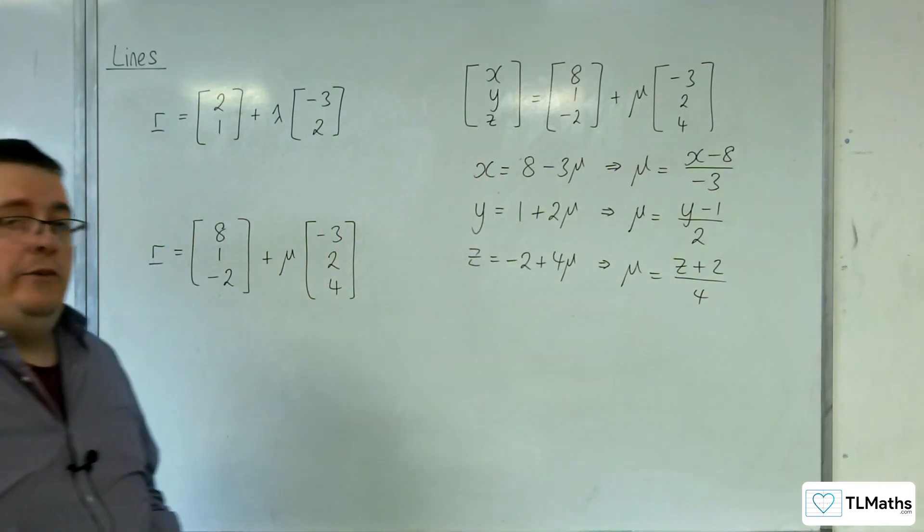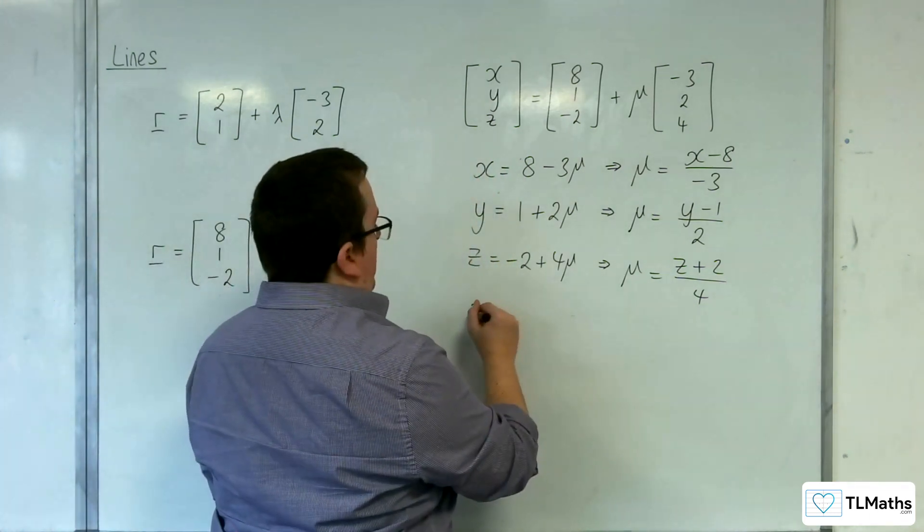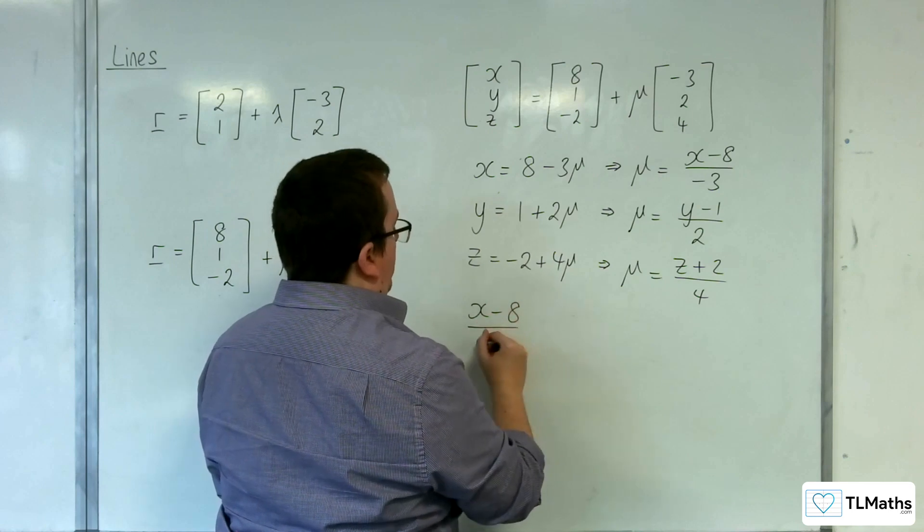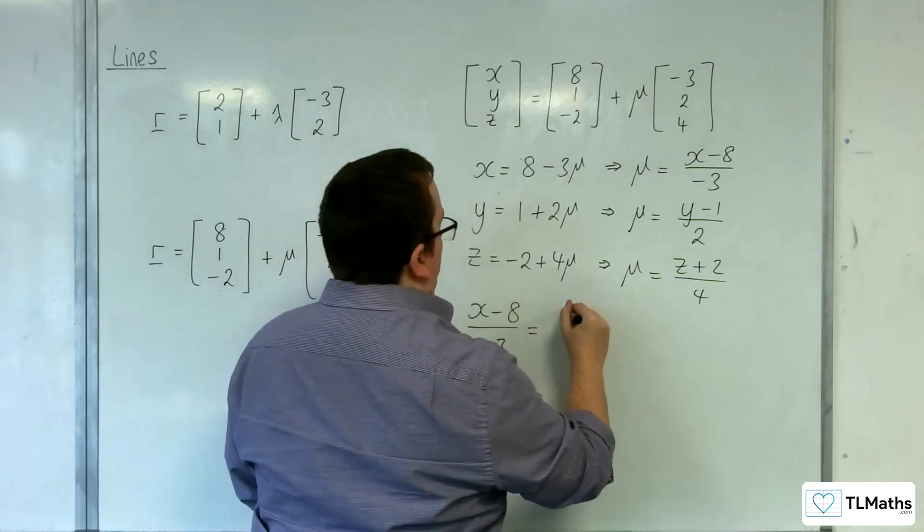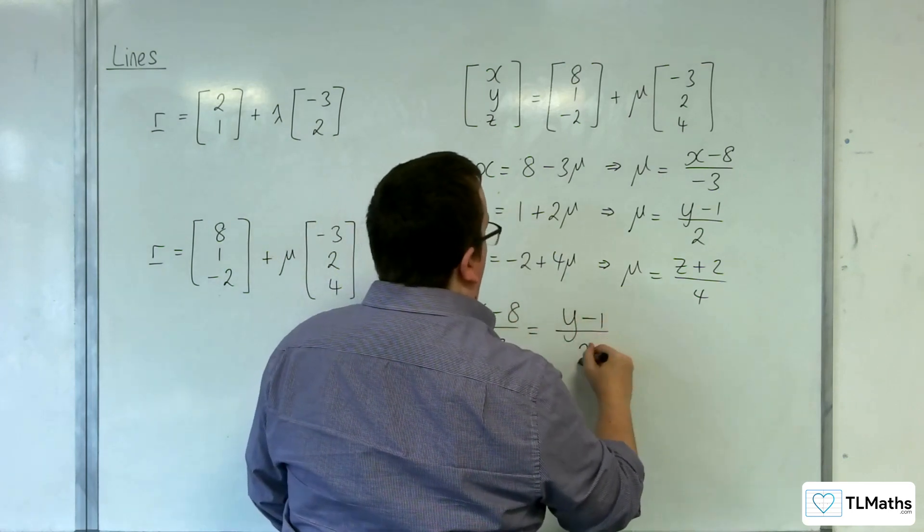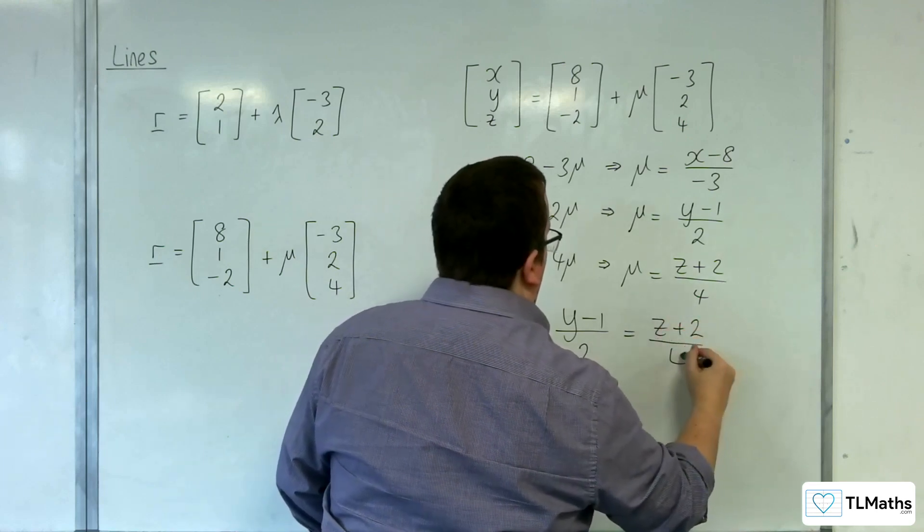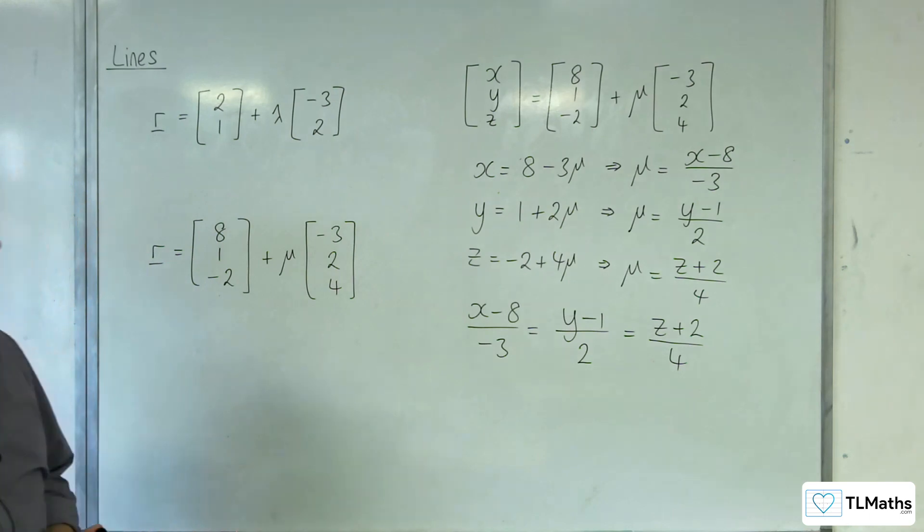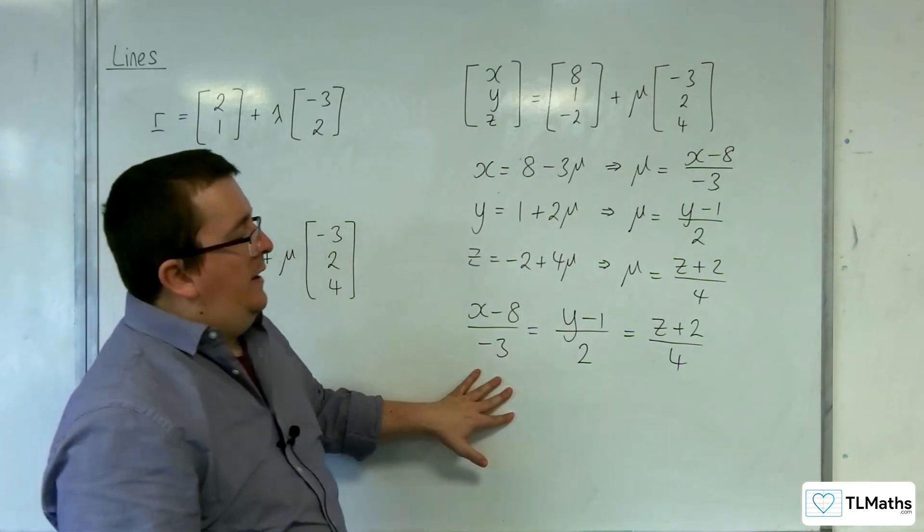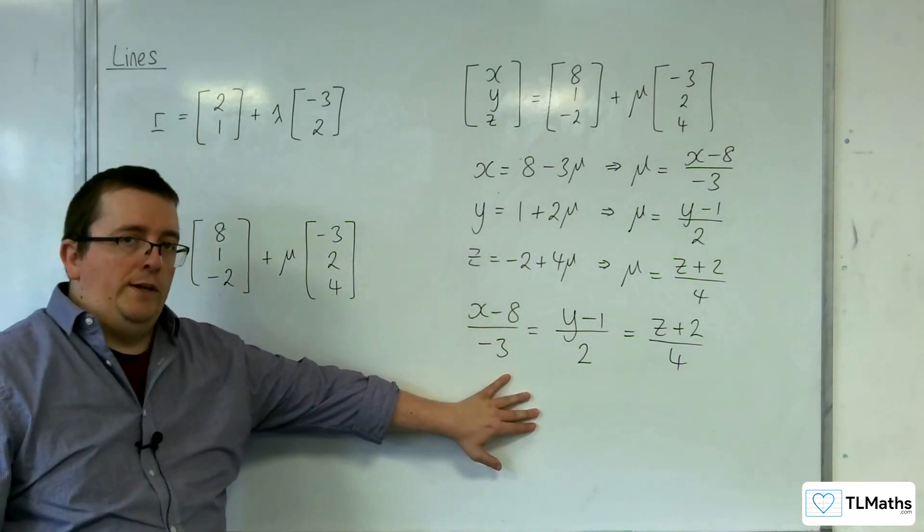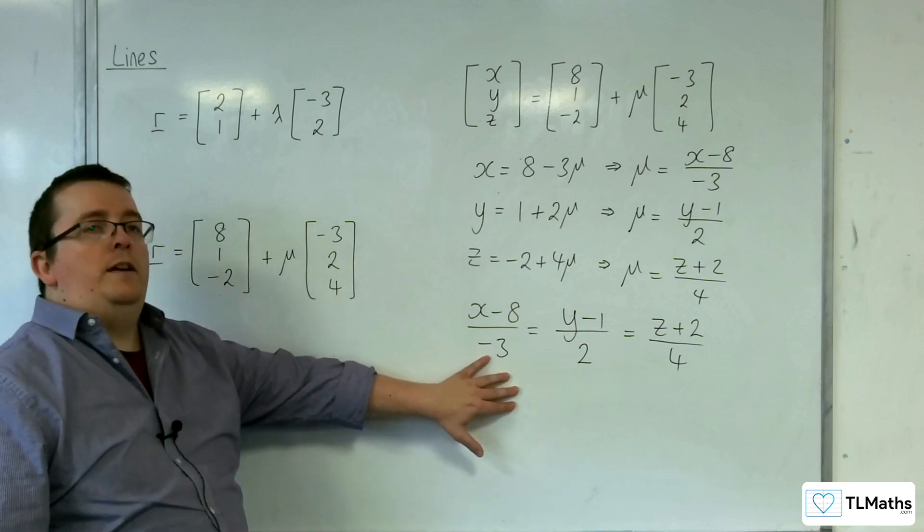Now, all of these mu's have to be the same. So, x take away 8 over minus 3 is equal to y minus 1 over 2, which is equal to z plus 2 over 4. And so, this is the Cartesian equation for the line in 3D.